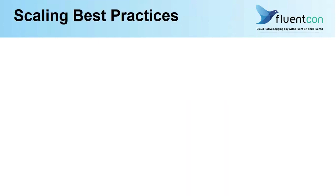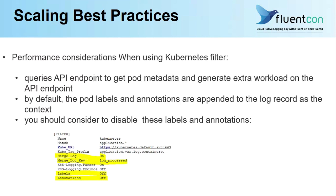When it comes to scaling best practices, the first thing you need to understand is the behavior of your filters and plugins that you are using. The Kubernetes filter generates extra load on your API service — you need to know this. Moreover, by default, it appends labels and annotations to your log records to add context. Most of the time, these labels and annotations don't have any business value; they are more Kubernetes-specific. But they add extra load on your logging delivery pipeline.